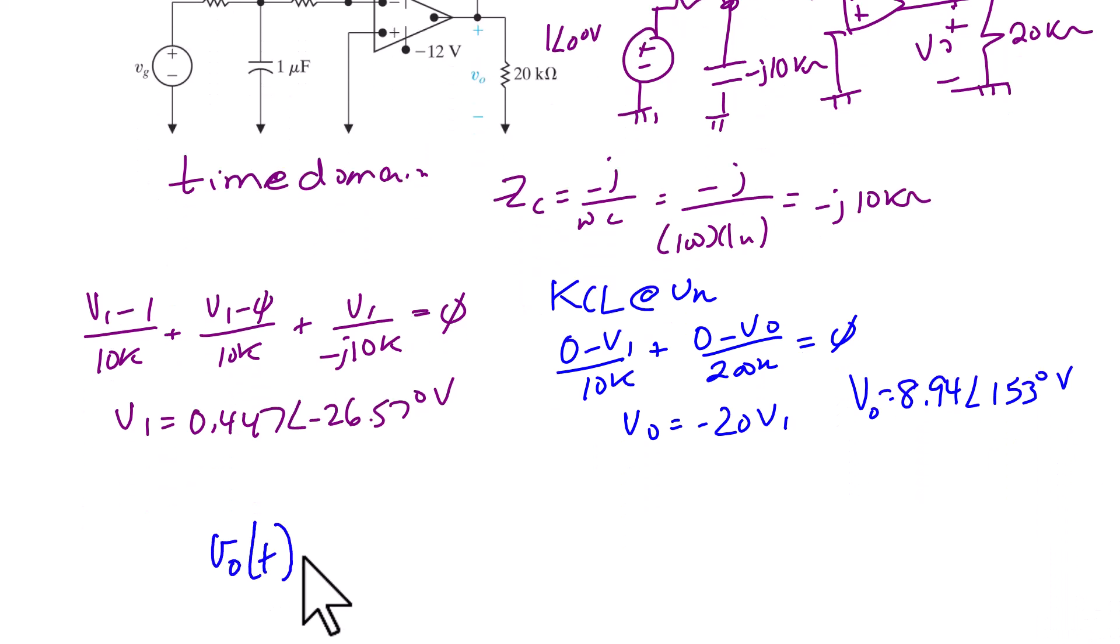So converting our answer back to the time domain, we get that V0 of t is equal to 8.92 cosine 100t plus 153 degrees.